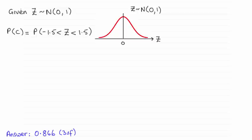And we're looking for the probability of being between minus 1.5, just put that in there, and 1.5 here. So there's kind of symmetry about this. We're looking at this area here.